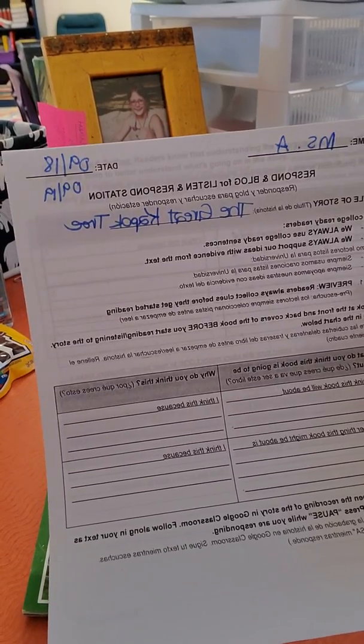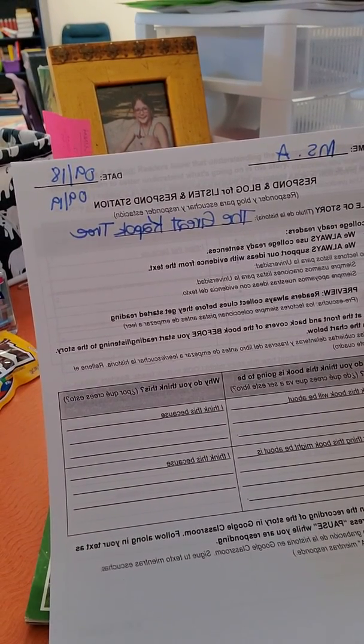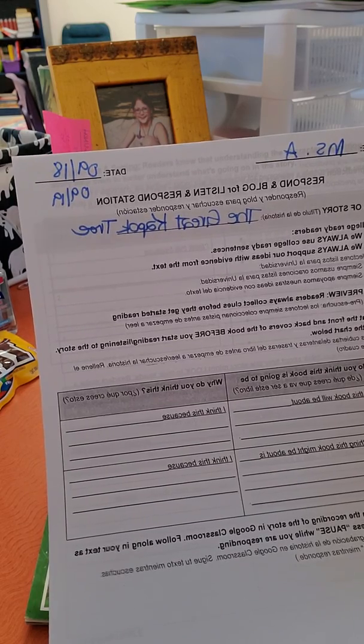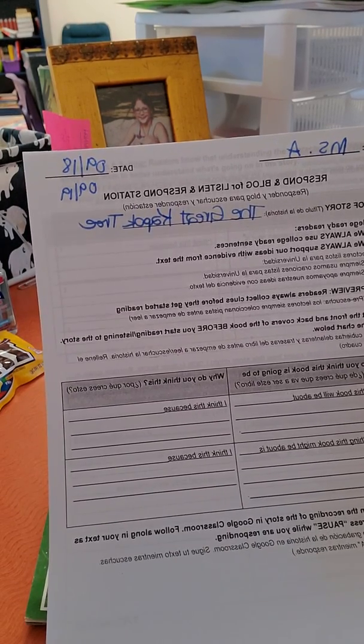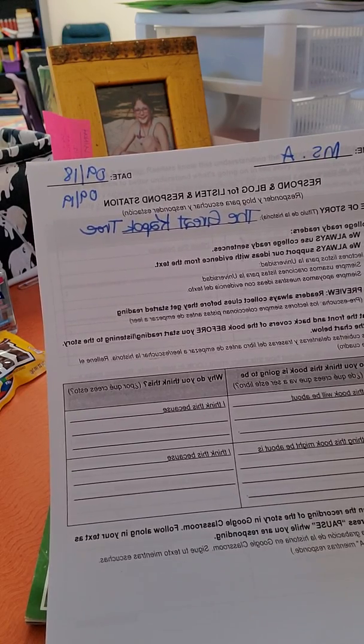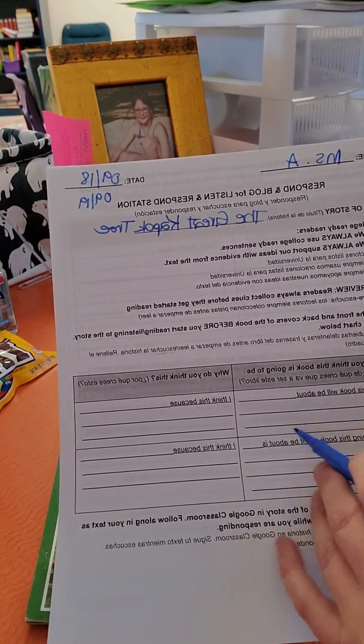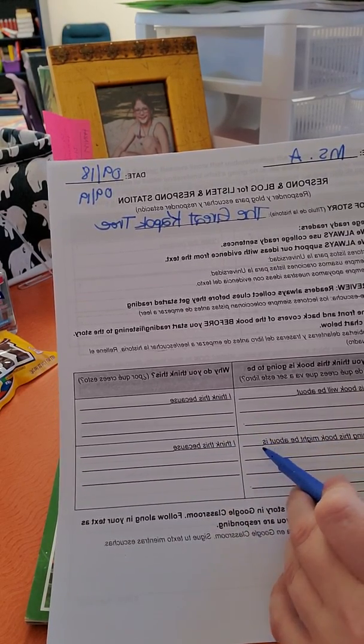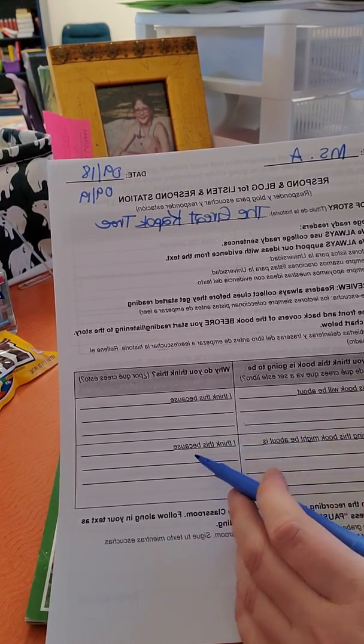Preview: readers collect clues before they get started reading. Look at the front and back covers of the book before you start reading or listening to the story. Fill in the chart below. What do you think this book is going to be about? Why do you think this? I think this book will be about blank. I think this because blank. Another thing this book might be about is blank. I think this because blank.